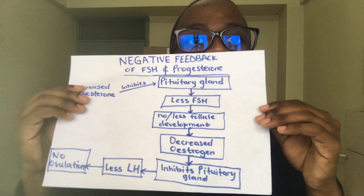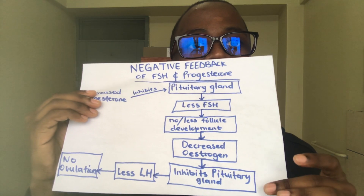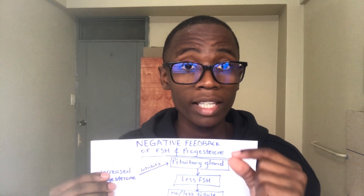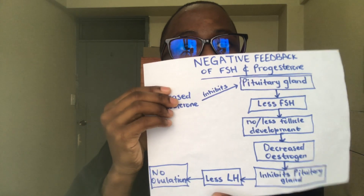The decreased level of estrogen then inhibits the pituitary gland from secreting LH — the luteinizing hormone — which would normally promote ovulation. So there will be no egg released, meaning a pregnant female cannot get pregnant again because there is no ovum being produced to fuse with sperm. There will be less LH, leading to no ovulation process at all.